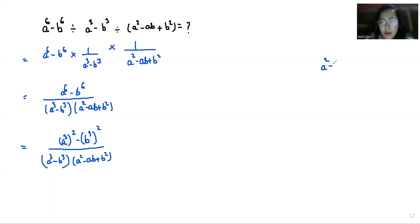According to identity a^2 - b^2, we can write it as (a + b)(a - b). So I'm going to apply this in the numerator. It becomes (a^3 - b^3)(a^3 + b^3) by a^3 - b^3 times a^2 - ab + b^2.